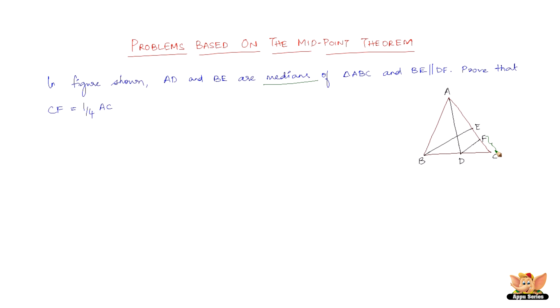We need to prove that this part is a quarter of the total side on which it lies. Median is nothing but the line that originates from a vertex and divides the opposite side into two equal parts. That is called the median of a triangle.